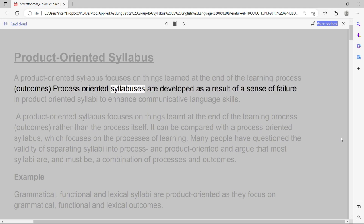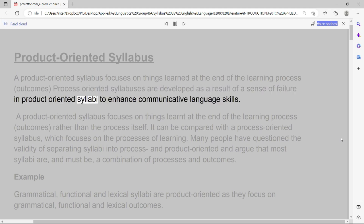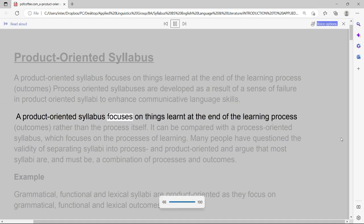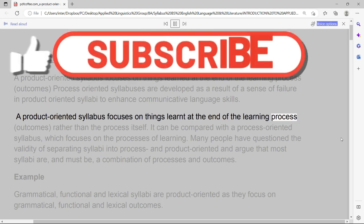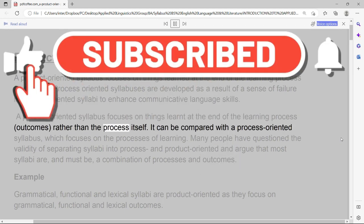Process-oriented syllabuses are developed as a result of a sense of failure in product-oriented syllabi to enhance communicative language skills. A product-oriented syllabus focuses on things learned at the end of the learning process, outcomes, rather than the process itself.